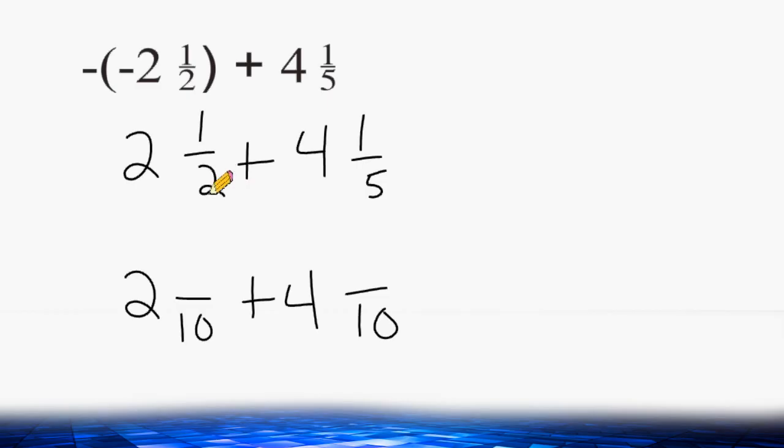So let's change this 2 into a 10, and this 5 into a 10 as well. Now it would take 5 of these to make 10, so we have to multiply the numerator by 5, which would also give us 5. And we had to double the 5 to make it 10, so we have to double the 1, and that would make it 2.